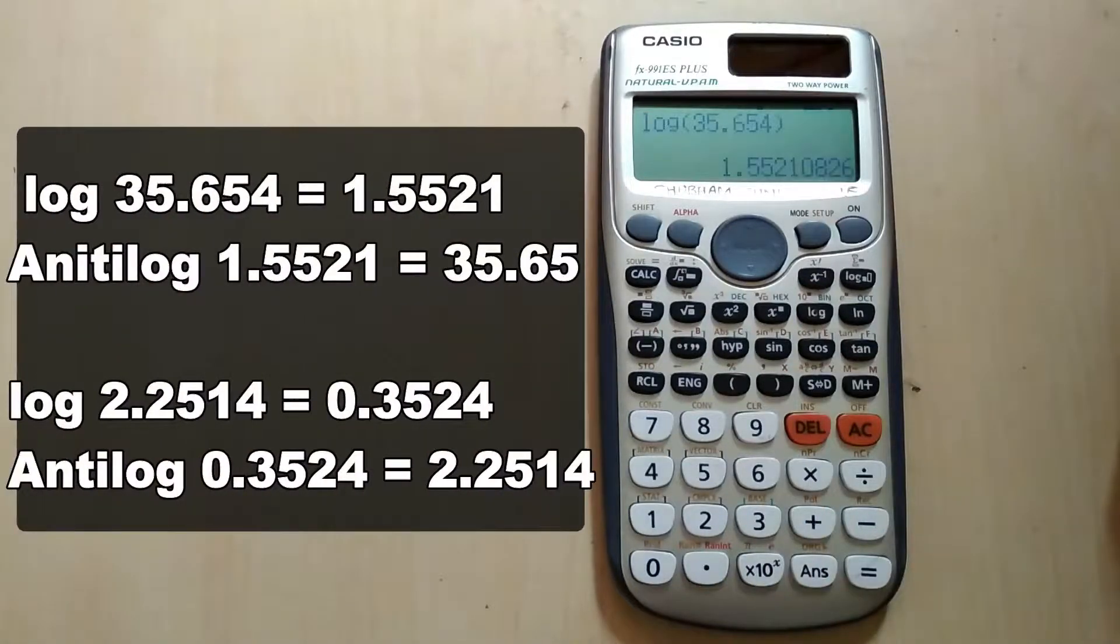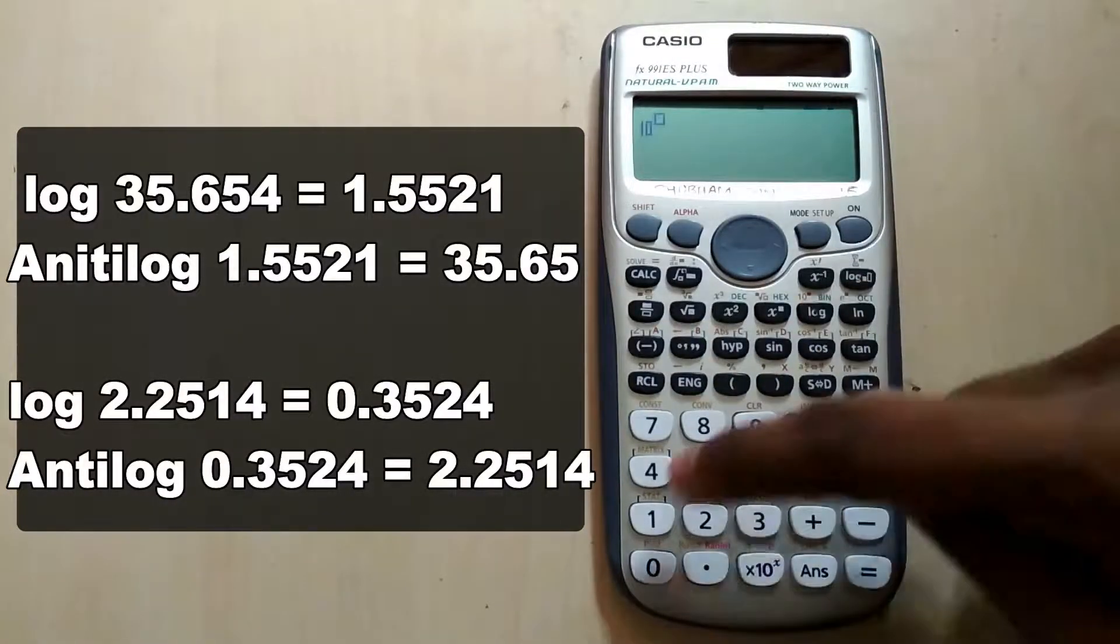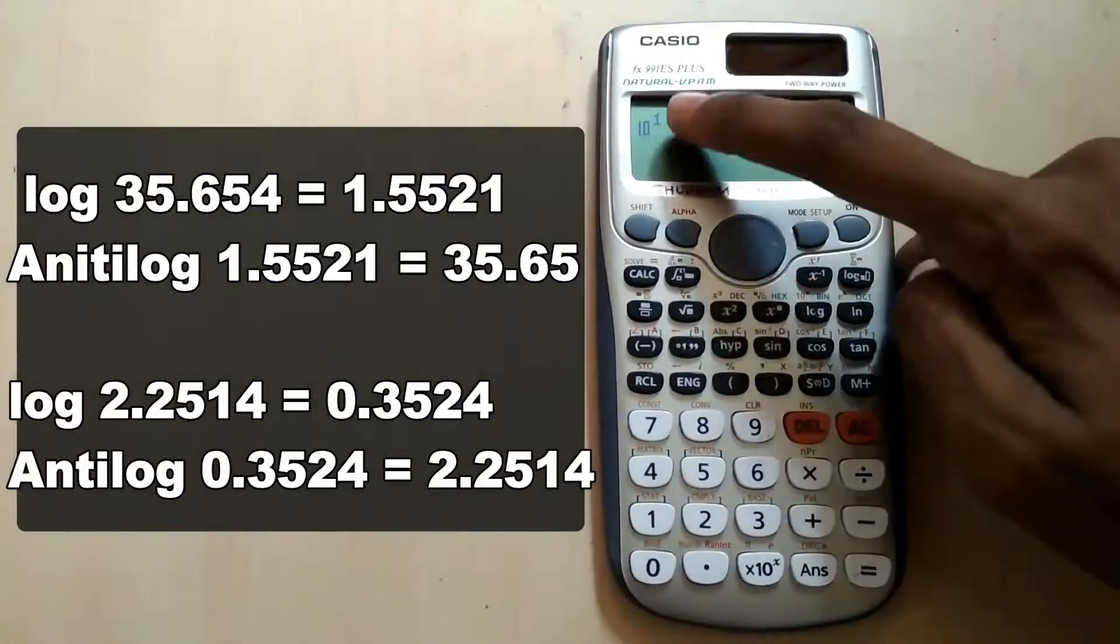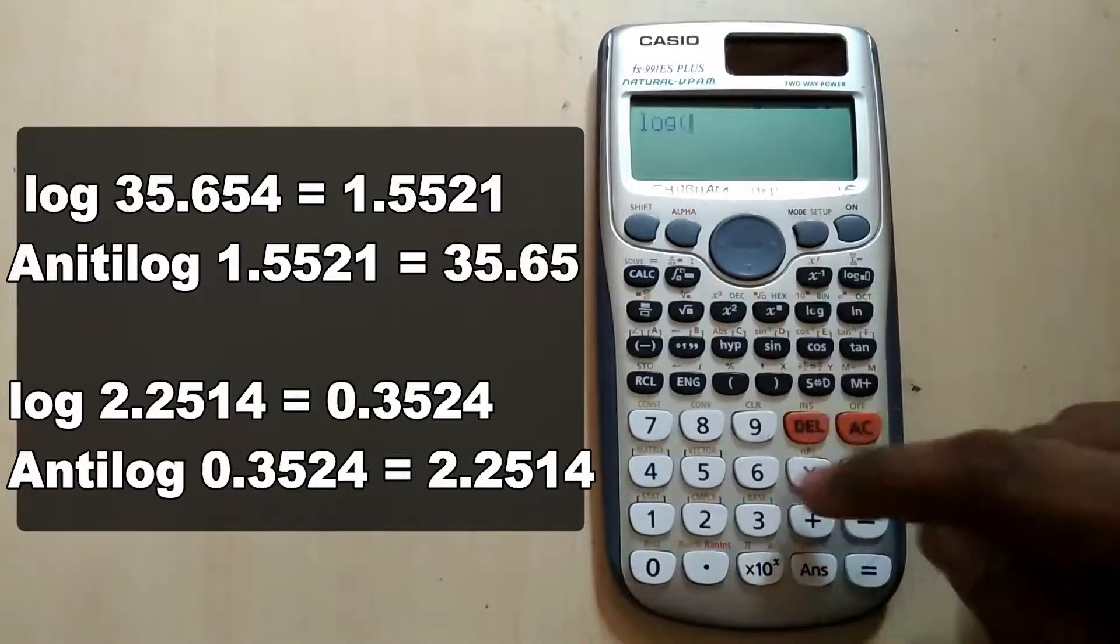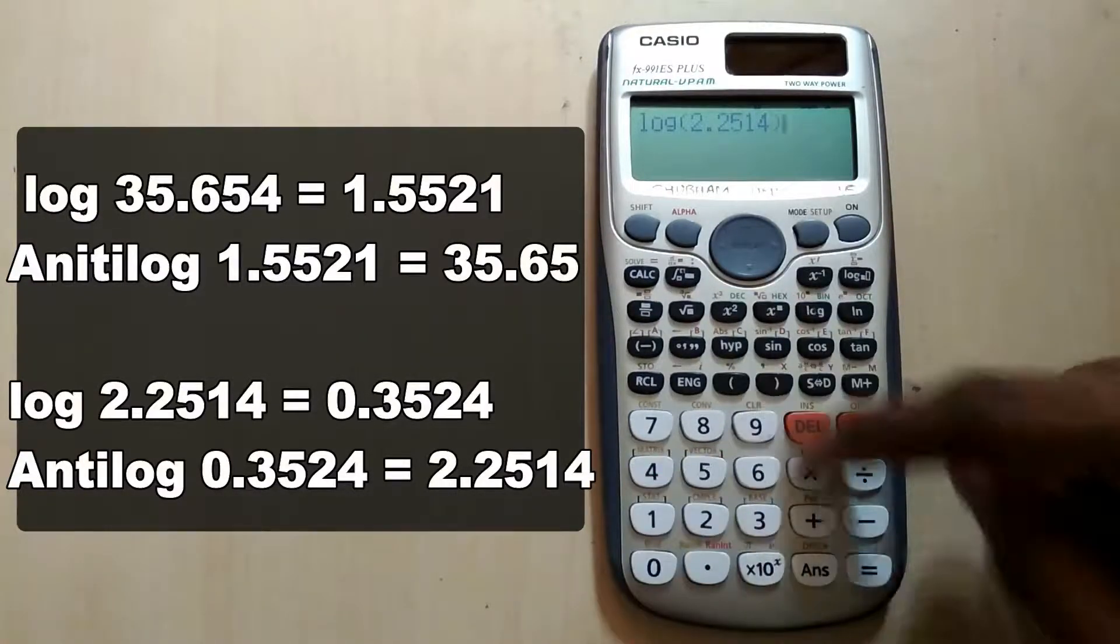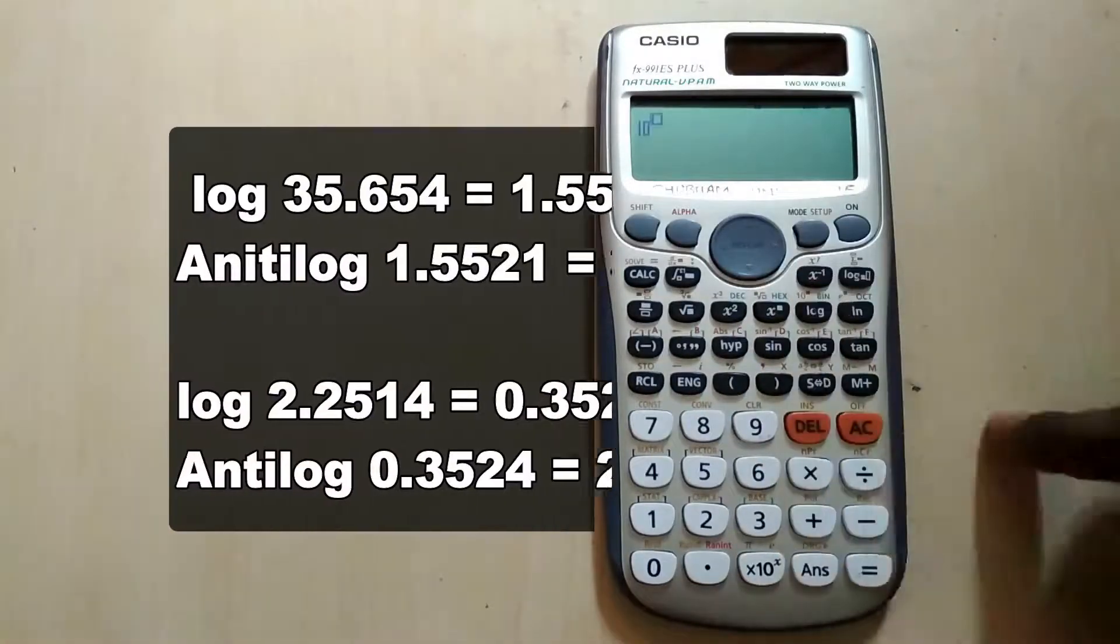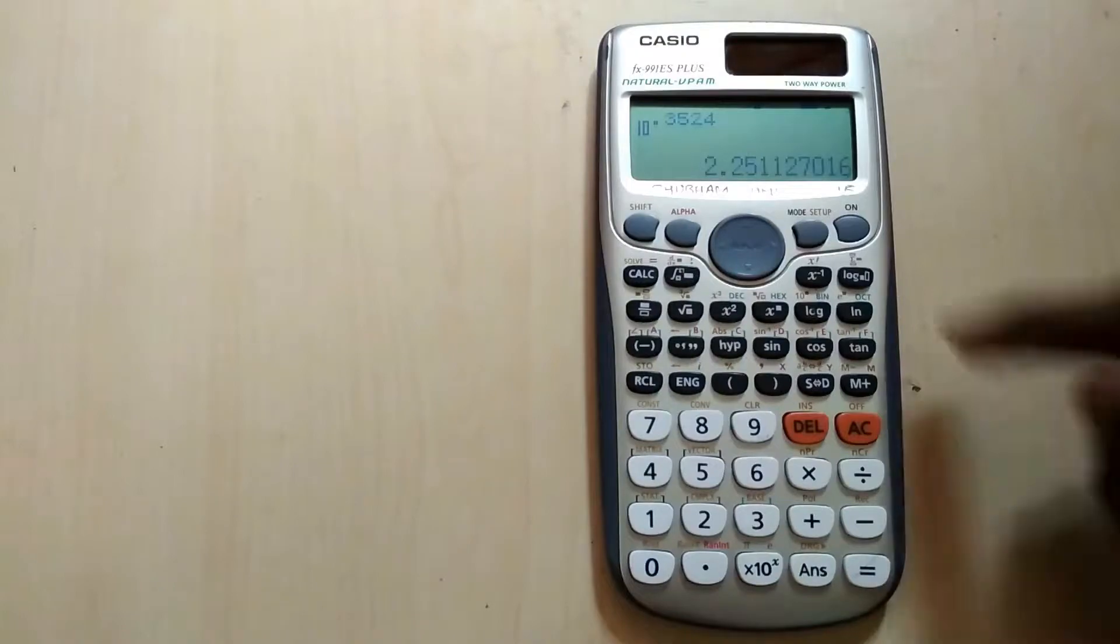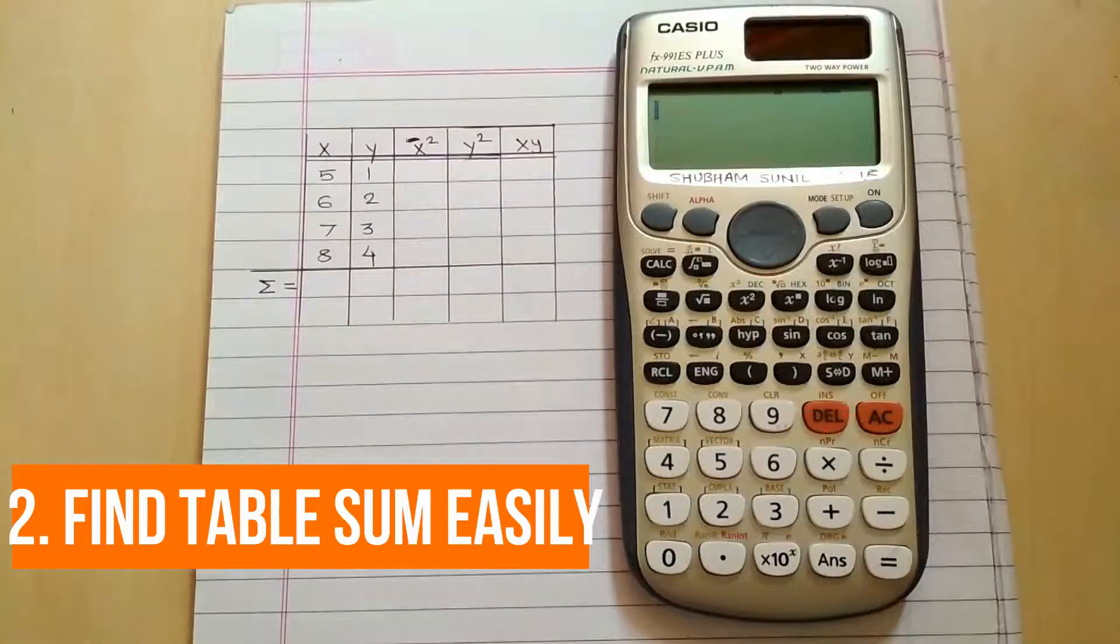To find log, just press the log button and the number and you will get the answer 1.5521. To find antilog, write shift, press shift and log button, write your number and you got the answer. Here is the second example, I got the answer 0.3524. To find antilog of that 0.3524, I got again the 2.25.1.